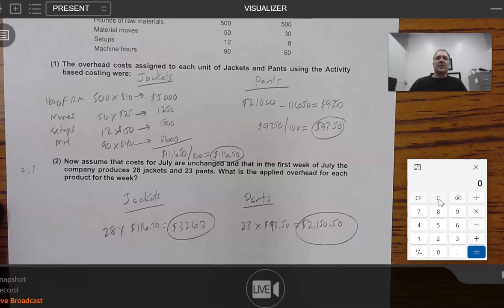So there you go. Activity-based costing for a two-product environment with four activity pools and related cost drivers.